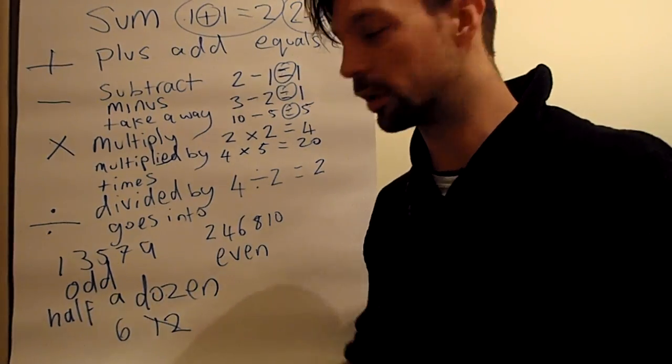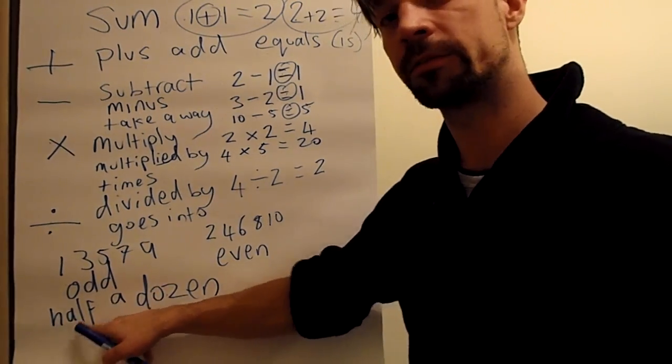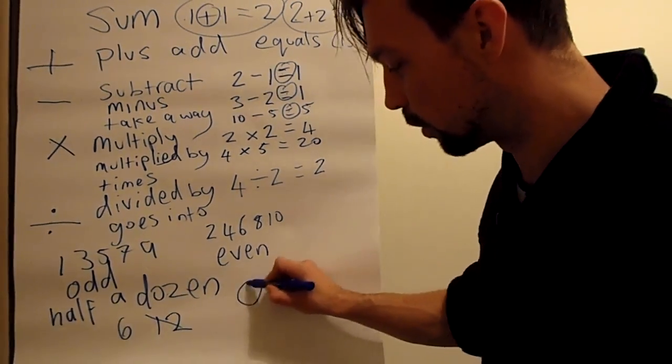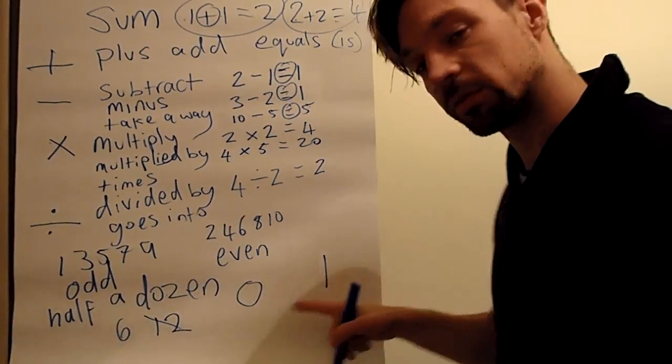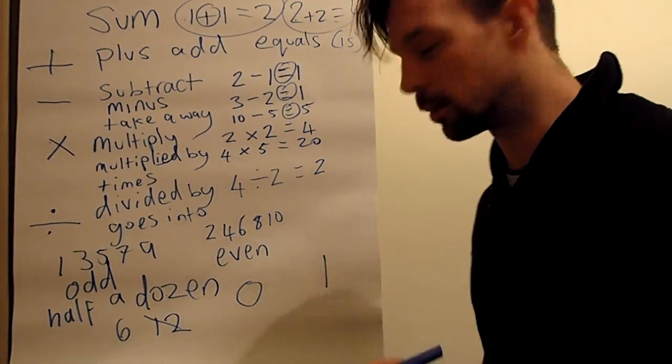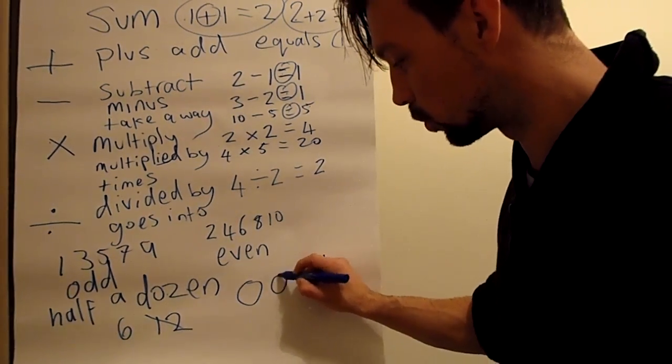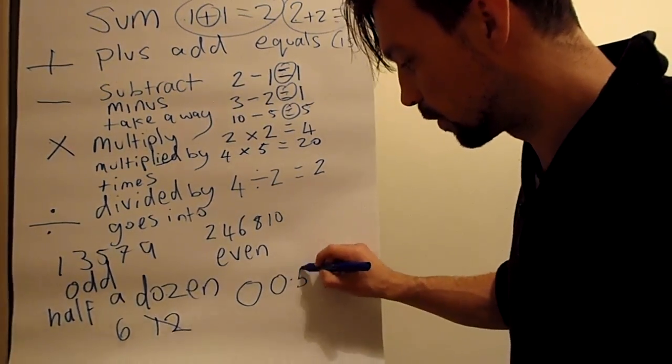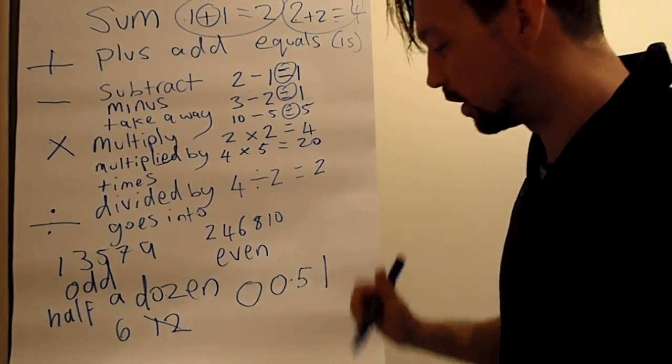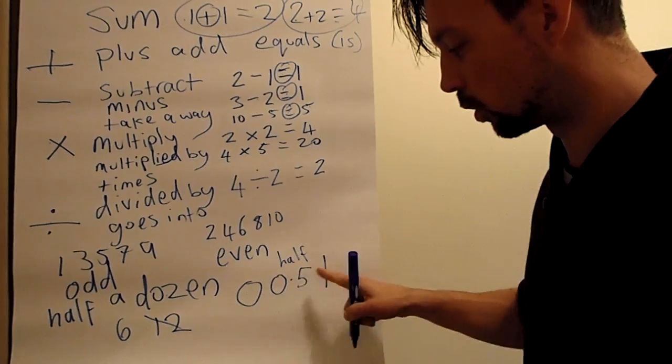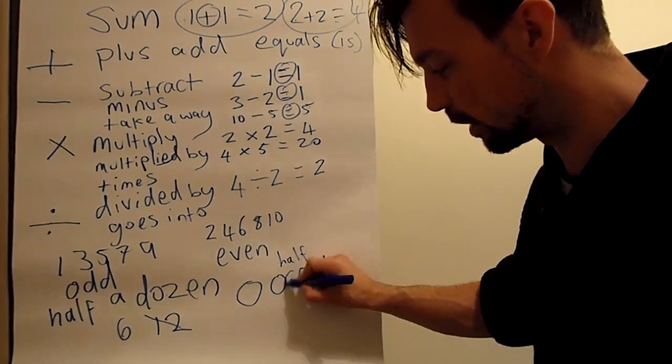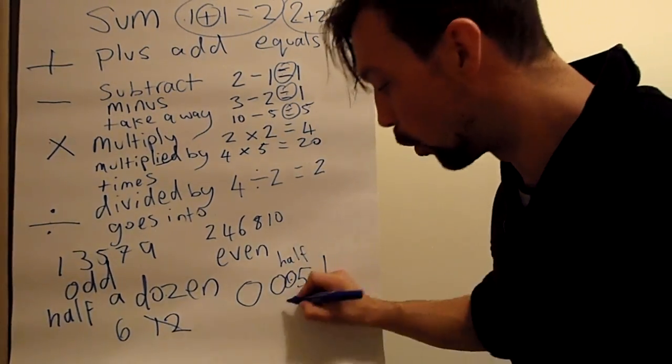Another thing we use when we're talking about half: if we have the number zero and the number one, but between this there are many, many numbers. For example, nought point five. And this is half of one. Between zero and one, nought point five is half. And we call this thing point.